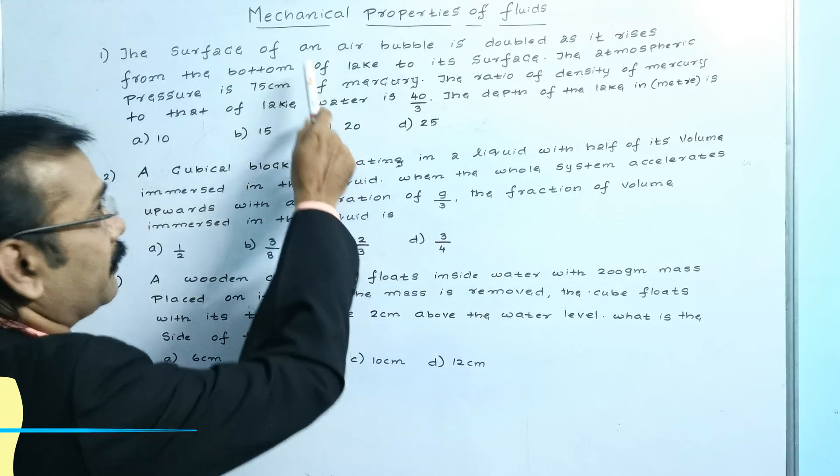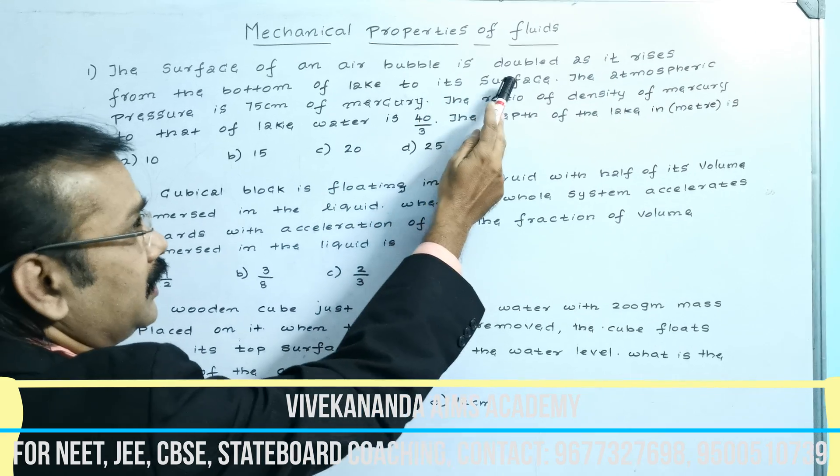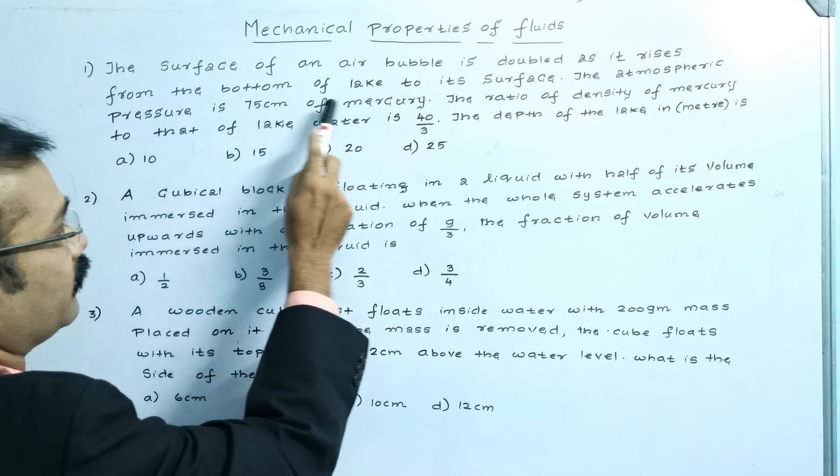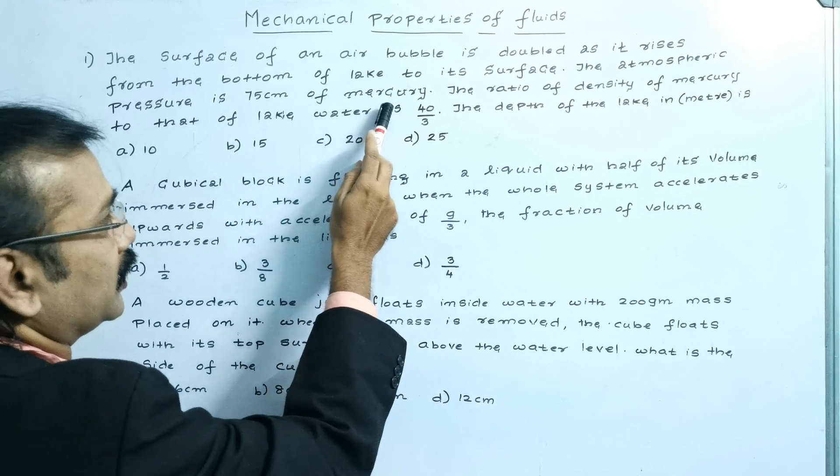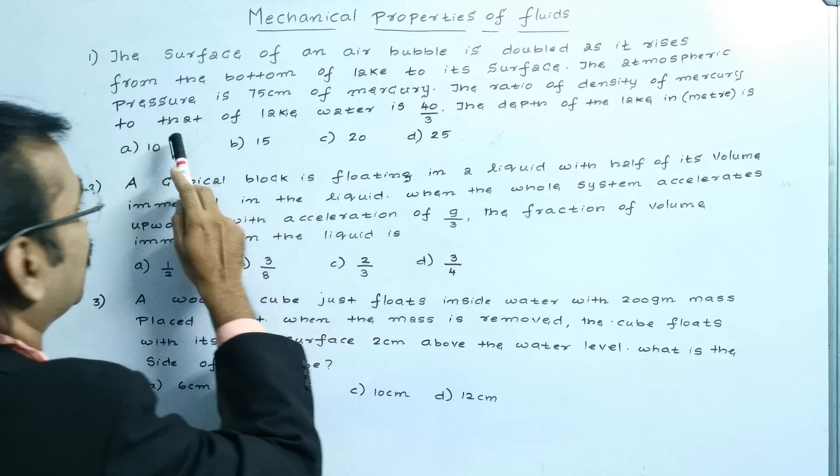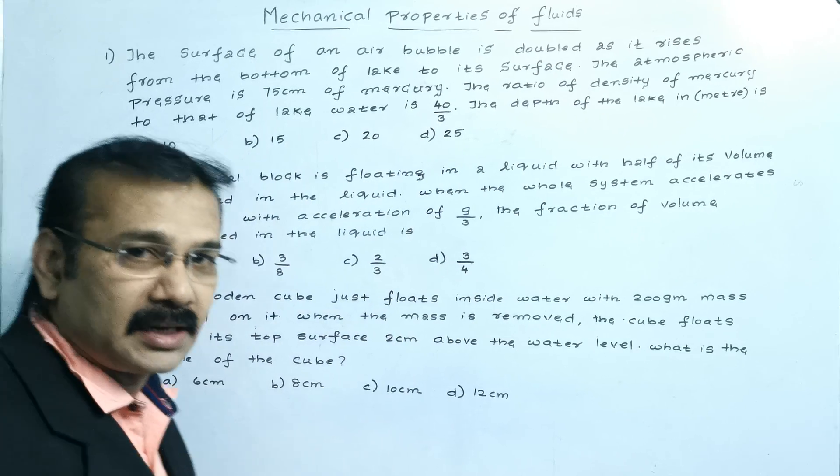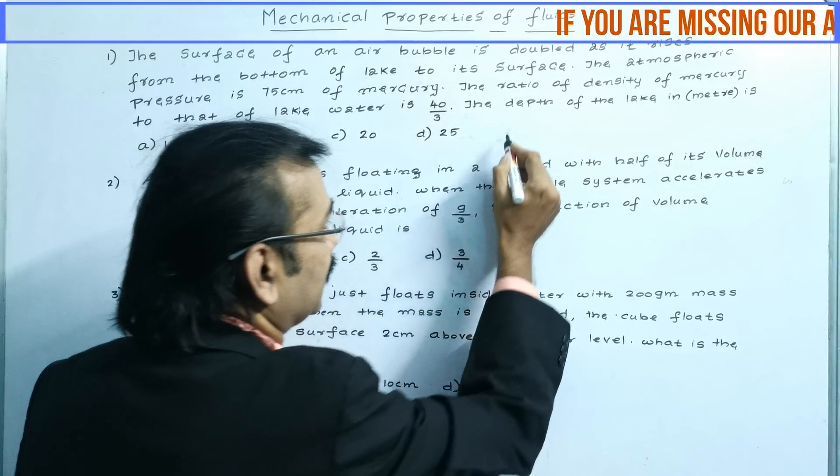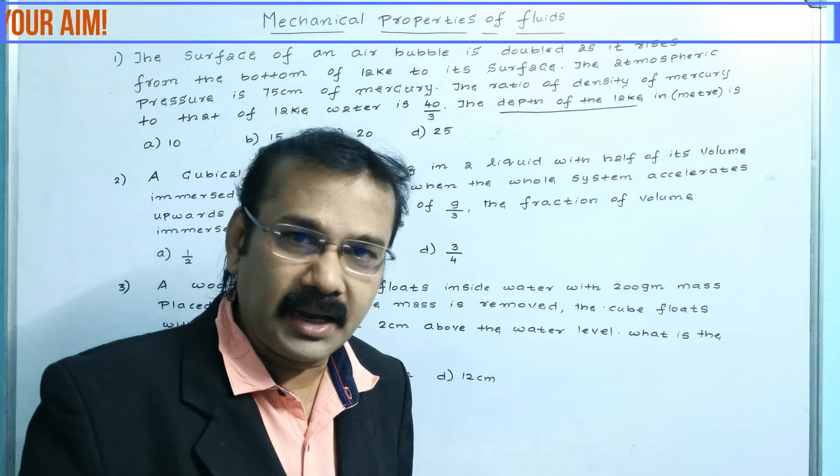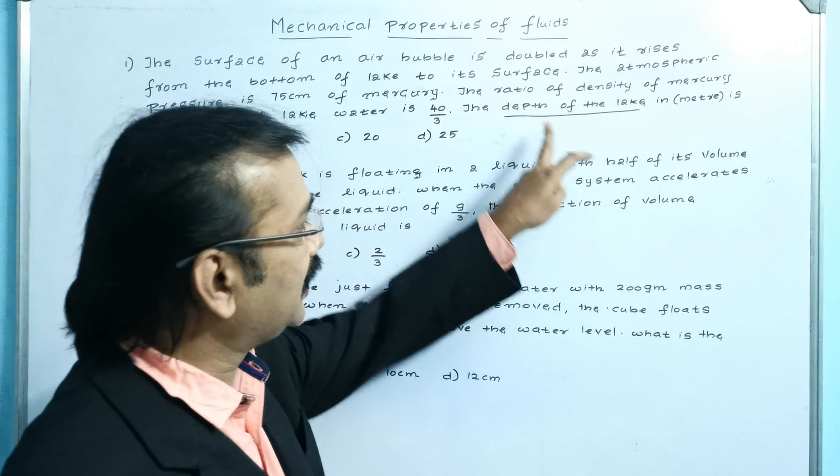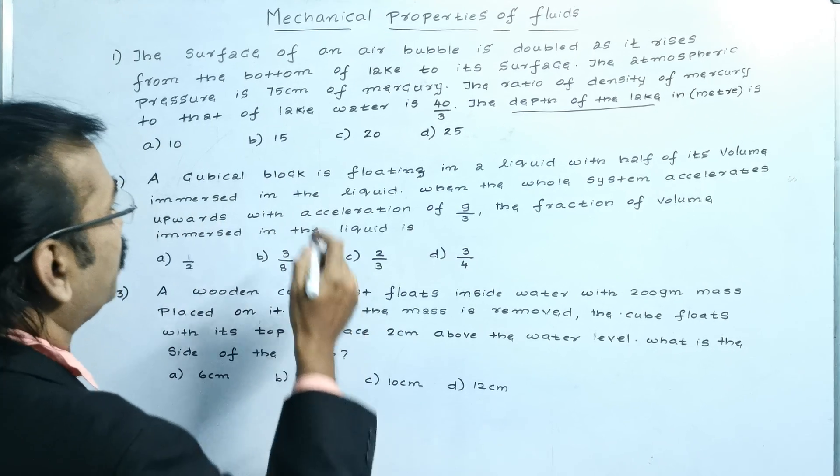First question: The surface of an air bubble is doubled as it rises from the bottom of a lake to its surface. The atmospheric pressure is 75 cm of mercury. The ratio of density of mercury to the lake water is 40 by 3. He is asking the depth of the lake.